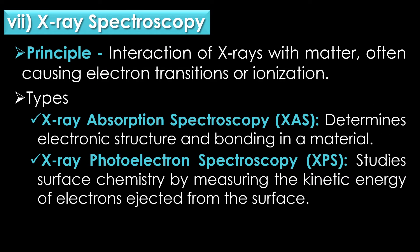The seventh type is X-ray spectroscopy. Its principle involves the interaction of X-rays with matter, often causing electron transitions or ionization. There are two types: X-ray absorption spectroscopy, which determines the electronic structure and bonding in a material; and X-ray photoelectron spectroscopy, which studies surface chemistry by measuring the kinetic energy of electrons ejected from the surface.